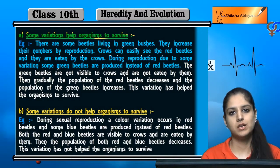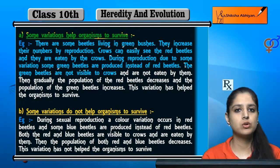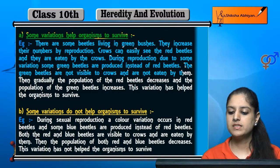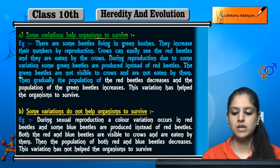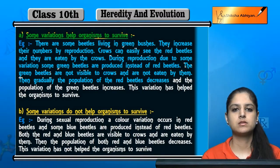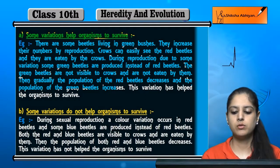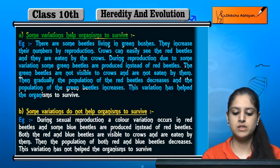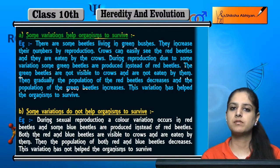Red ki jagah green ho gai. Is case mein jo green beetles hain, they are not visible to the crows. Red beetles toh nazar aa jaate hain, ab yeh green wale crows ko nazar nahi aate hain, aur isi ki wajah se crows unko nahi kha pate. Then gradually, the population of red beetles decreases — woh dheere dheere decrease ho jaate hain, kyunki crows unpar feed karte hain. Aur jo green beetles hain, unki population increase ho jaati hai. Is variation ki wajah se, is color variation ki wajah se, ek type ki organism jo hai woh survive kar pa rahi hai — jo green beetles hain woh survive kar pa rahe hain.